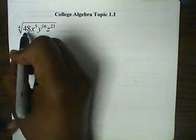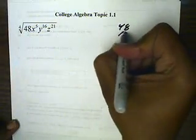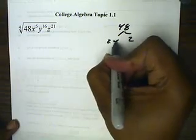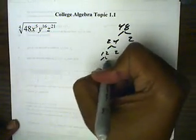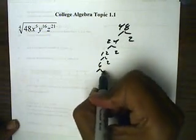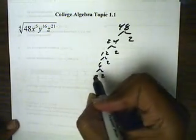College Algebra, Topic 1.1. We want to simplify this expression. So first, it's the fourth root, so I want to take the 48 and break that down into factors. Let's say 2 times 24, and 24 can be broken down into 2 times 12, and 12 can be broken down into 2 times 6, and 6 can be broken down into 2 times 3.